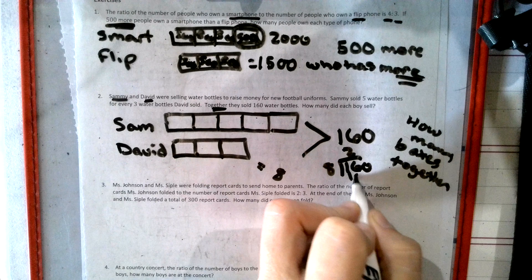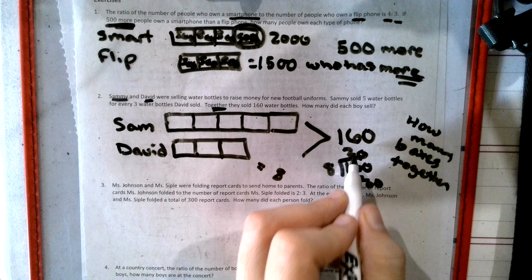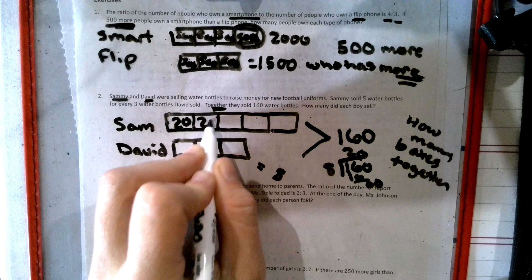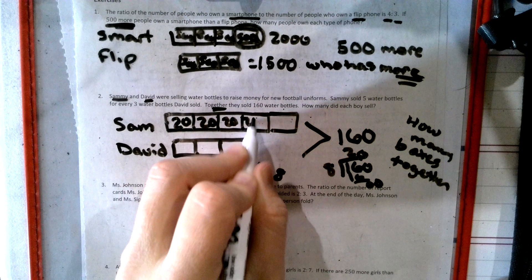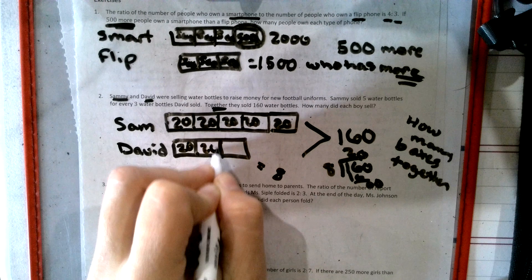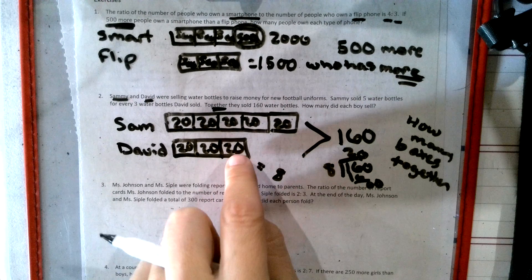Eight goes into 16 twice. Eight goes into zero, zero times. That means I'm putting a 20 in every box together. So when we can check this after, because together, they have total 160. 20, 40, 60, 80, 100, 20, 40, 60. Yes.